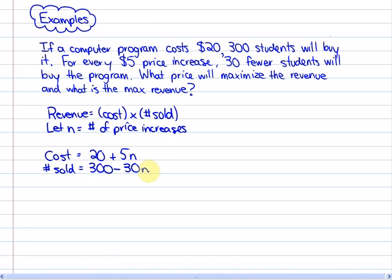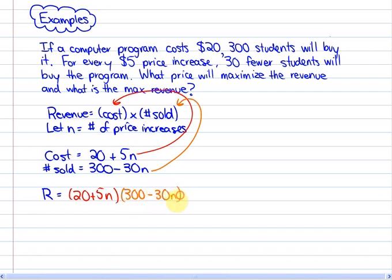If we use these two expressions and substitute them into the formula for revenue, we'll notice that we actually have a quadratic function. So, revenue is equal to cost, which in this case is $20 plus $5 per price increase, times number sold, which is 300 minus $30 people per price increase.